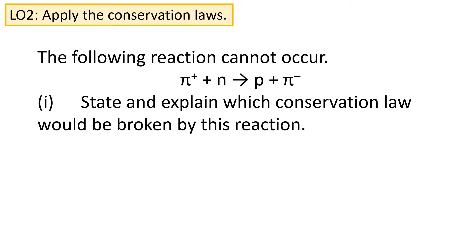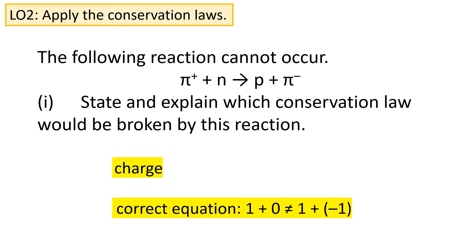It's also true that conservation laws help us understand which types of interactions are going to be impossible. Here's another question — pause the video if you'd like to have a go. The key point is that the interaction is going to be impossible because one of our conservation laws is going to be broken. The answer is that conservation of charge is going to be violated, because the charge beforehand is going to be plus one and the charge afterwards is going to be zero.